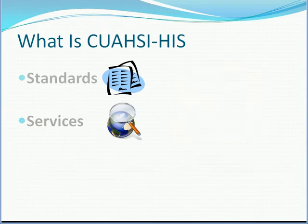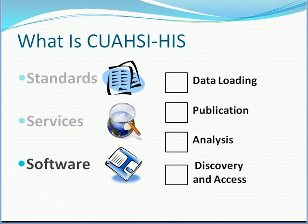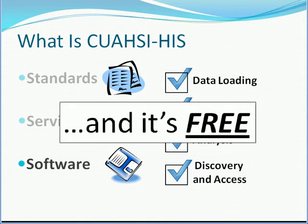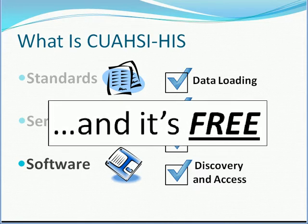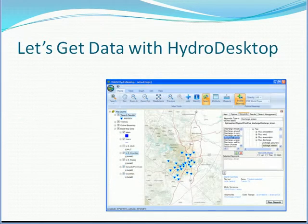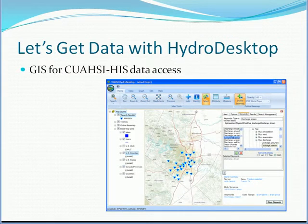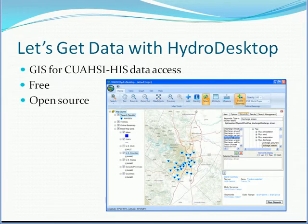Quasi-HIS also develops software that you can use to help with data loading, publication, analysis, discovery, and access. All the software that Quasi-HIS develops is free and open source. In this demo, I'll use the Hydro Desktop software to show you how to access water data. This is a GIS for HIS data access that's free, it's open source, and you can download it and all other HIS software from our website at his.quasi.org.